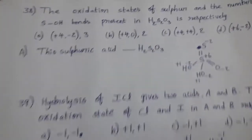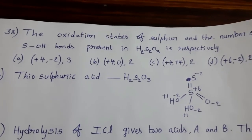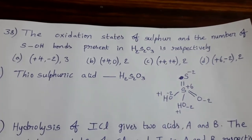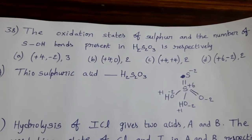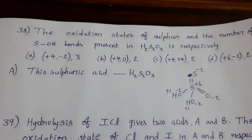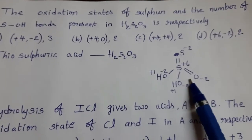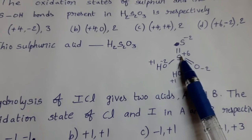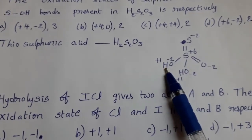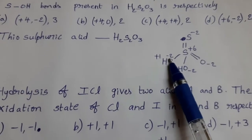Next. The oxidation states of sulfur and the number of S-O-H bonds present in H2S2O3 is respectively. Thiosulfuric acid, formula H2S2O3. In this, this is the structure. S attached with OH, OH and double bond O, double bond S.